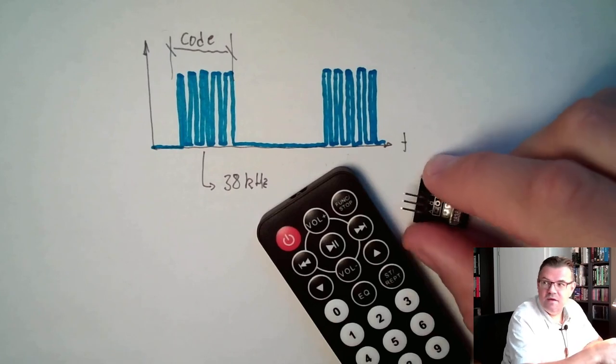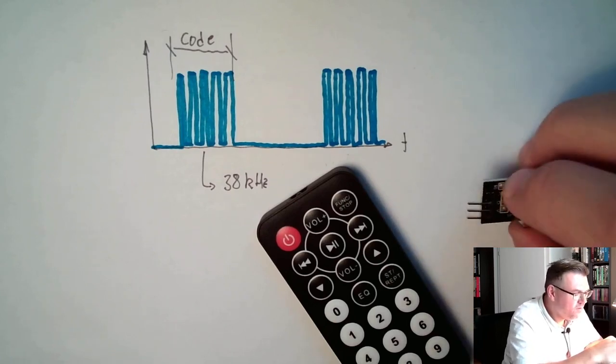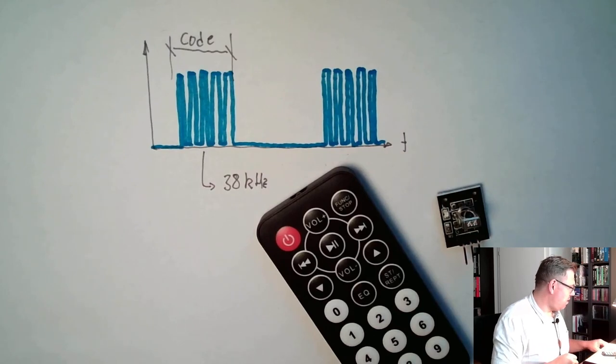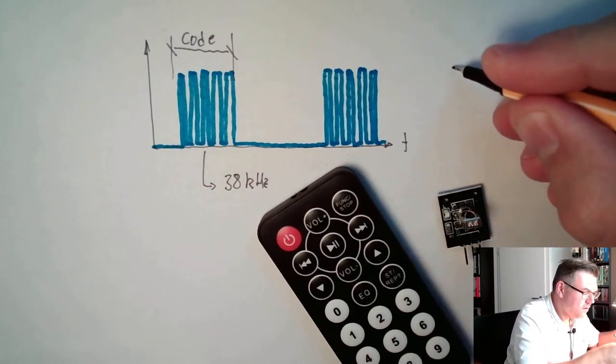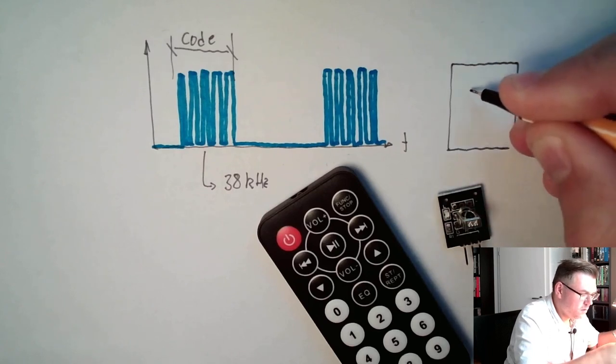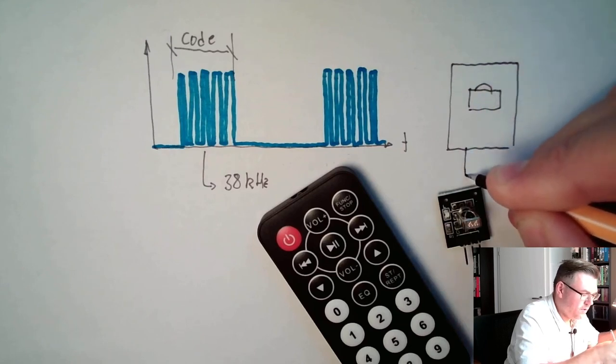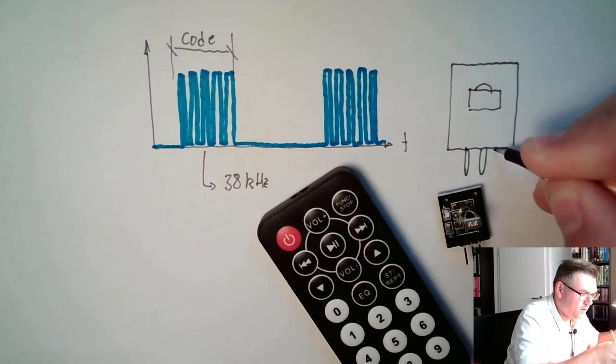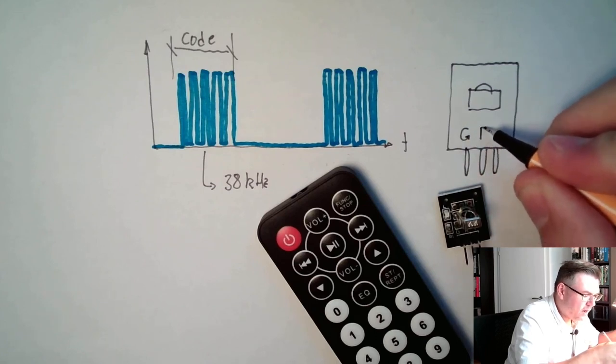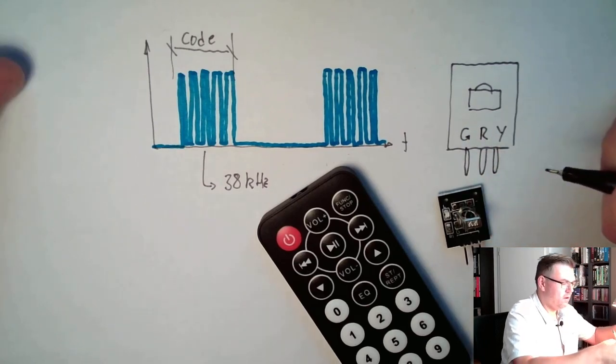And we have here three different pins. So our infrared receiver has here three connectors. One is labeled G, one is labeled R, one is labeled Y.